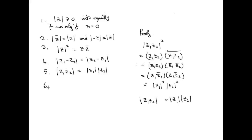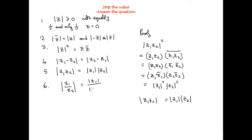Having seen that, you could probably attempt to prove the division property yourself: the modulus of z1 divided by z2 equals the modulus of z1 divided by the modulus of z2. The proof is very similar to what we just did for property 5. Stop the video and see if you can try that.